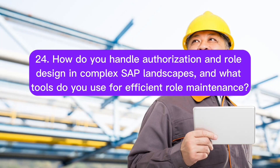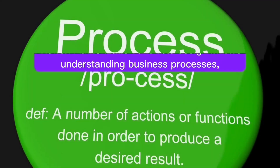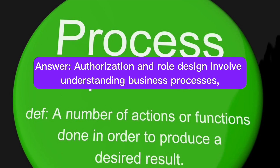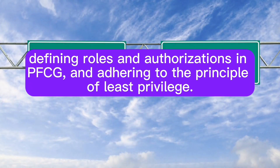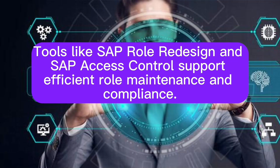Question 24: How do you handle authorization and role design in complex SAP landscapes, and what tools do you use for efficient role maintenance? Answer: Authorization and role design involve understanding business processes, defining roles and authorizations in PFCG, and adhering to the principle of least privilege. Tools like SAP Role Redesign and SAP Access Control support efficient role maintenance and compliance.